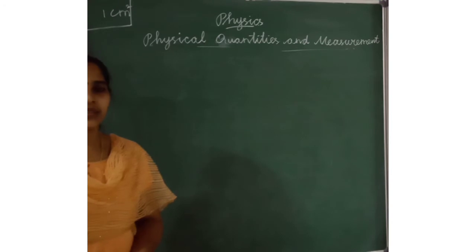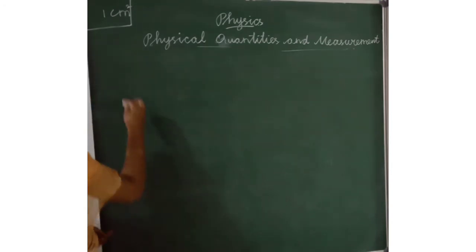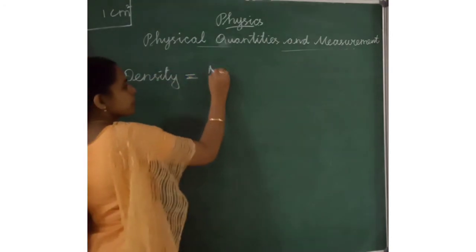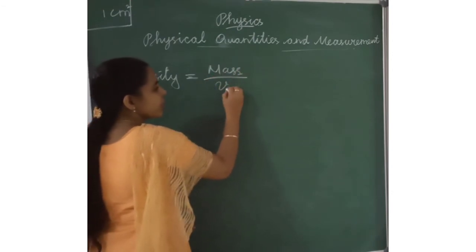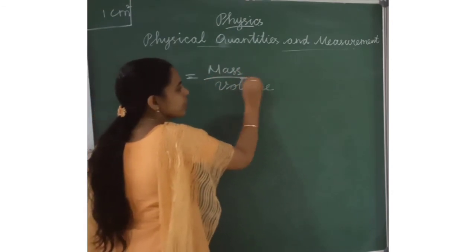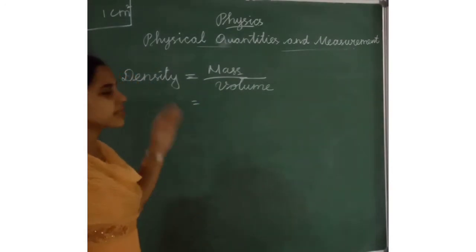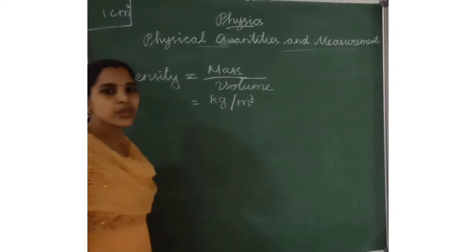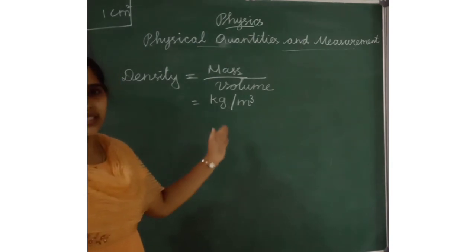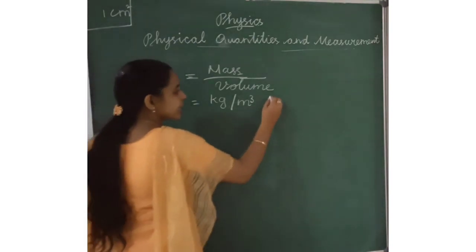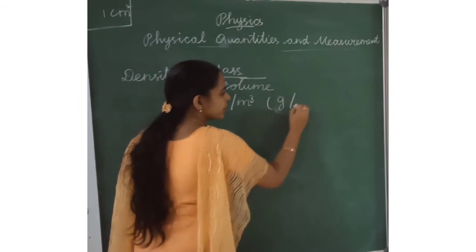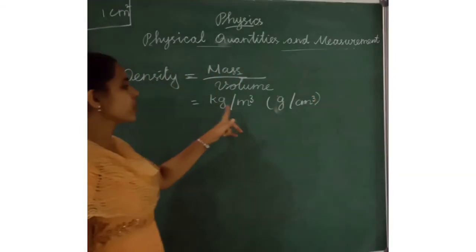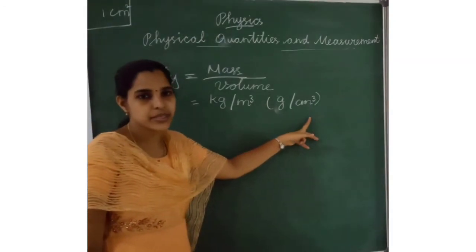Next, how to find density. The formula is: density equals mass divided by volume. The SI unit of density is kilogram per meter cube. The CGS unit of density is gram per centimeter cube. We can use either of these two units.